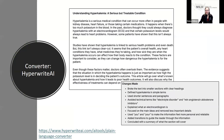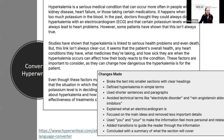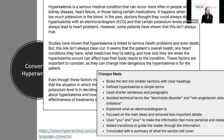HyperWrite AI Plain Language Converter leverages AI to generate original, clear, and engaging content. You simply put in the content you'd like converted and it will produce text that's easy to understand and free of jargon, and it provides an overview of the changes it made. Depending on your audience, this iteration may still be written at a level too advanced, but it's a good start. It broke up the text into three paragraphs, made definitions of medical terms more accessible, and provided explanations of what longer medical terms meant.